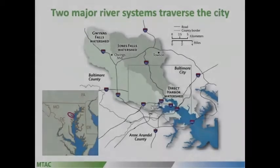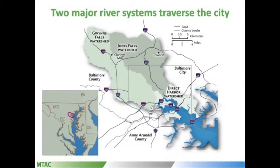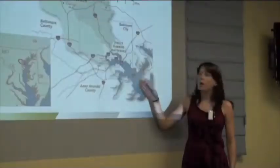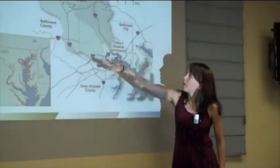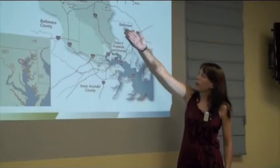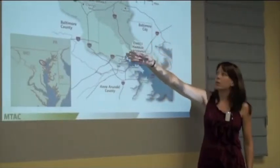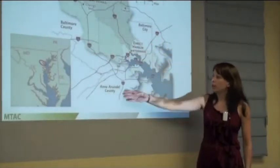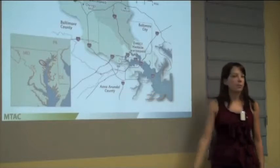Just to further orient you: some of the major road systems and the city and county borders. Baltimore City encompasses some of the watersheds and the entire direct harbor watershed that we were looking at. This is the beltway around Baltimore, and then some of the major suburbs - Towson, Maryland, and Owings Mills, Maryland - are in each of the watersheds. We're down here in Anne Arundel County right now.